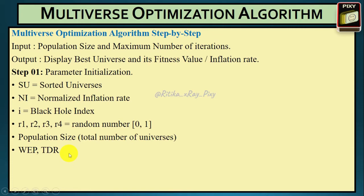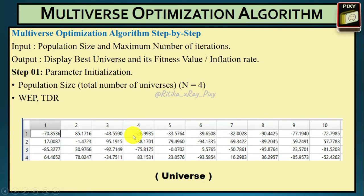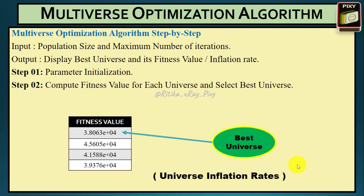In step one we initialize all the important parameters — population size, random numbers, and so on. This is the initial population for four universes. Suppose we have a population size of 4; this is the initial position for N universes where N equals 4.